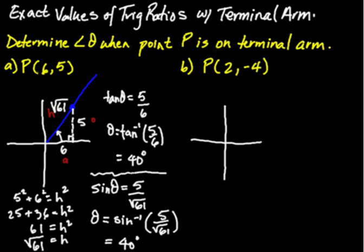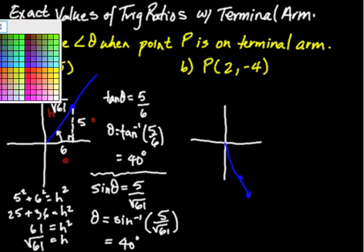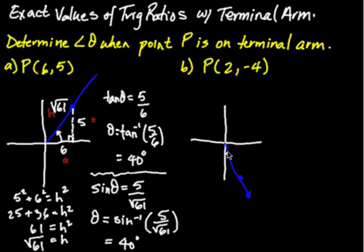We'll do the next question. Point P is (2, -4). That means my point 2, negative 4, approximately there, falls in the fourth quadrant. I'm going to have to approach this question a little bit different towards the end to find out what the angle is.